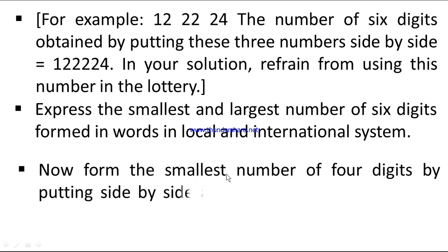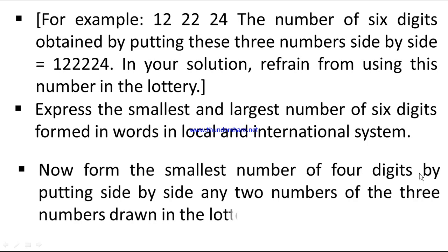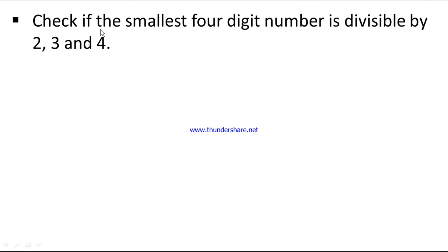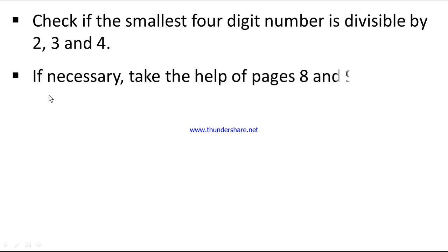Now form the smallest number of four digits by putting side by side any two numbers of the three numbers drawn in the lottery. Check if the smallest four-digit number is divisible by 2, 3, and 4. If necessary, take the help of pages 8 and 9 of the textbook.